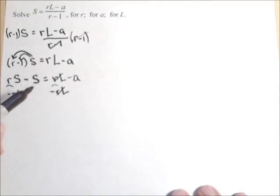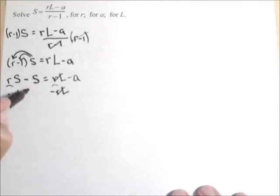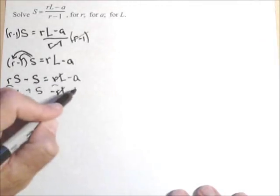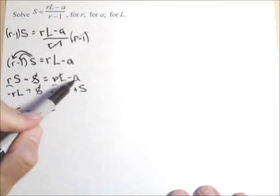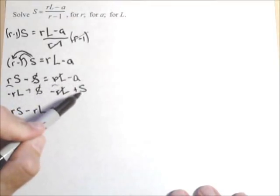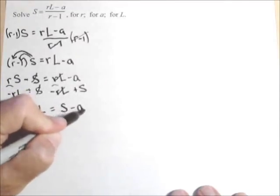Now all the terms that do not have an R in them need to go to the other side. So that means this is already good. We need to move the S over and we can do that by adding it. So once again, that's gone. So looking at what we have left, we have an RS minus RL on the left-hand side. On the right-hand side, we have a negative A and a positive S and we can put those in either order as long as we keep our signs. So let's write it as S minus A.